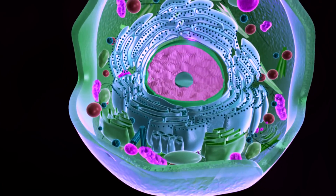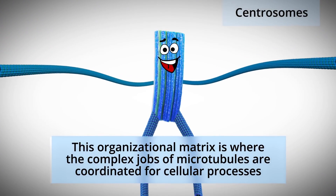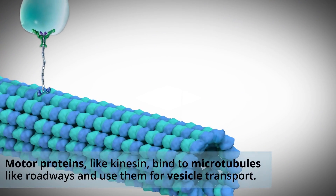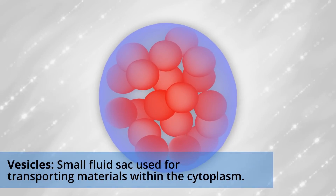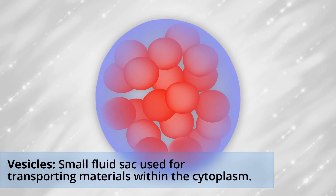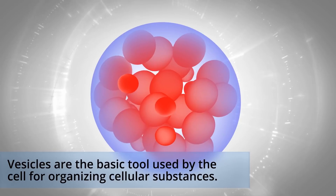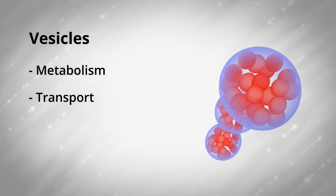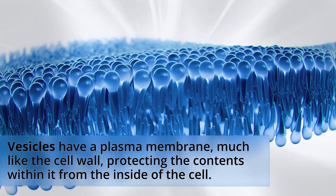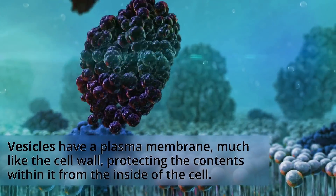This organizational matrix is where the complex jobs of microtubules are coordinated for cellular processes. Motor proteins bind to microtubules like roadways and use them for vesicle transport. A vesicle is a small fluid sac used for transporting materials within the cytoplasm. Vesicles are the basic tool used by the cell for organizing cellular substances, playing a key role in metabolism, transport, enzyme storage, and more. Just like the cell wall, a vesicle has a plasma membrane separating the contents within it from the inside of the cell.